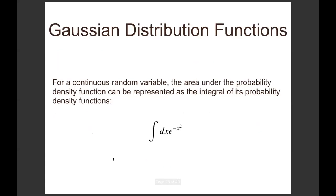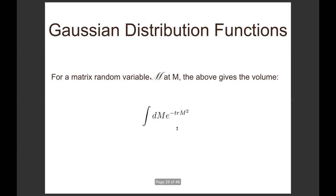So how do the Gaussian ensemble models look like? If you have a continuous random variable, the area under the probability distribution function, as you all know, can be represented by the following integral: dx e to the power of minus x squared.